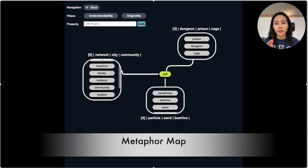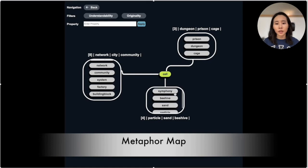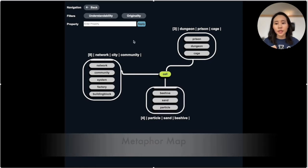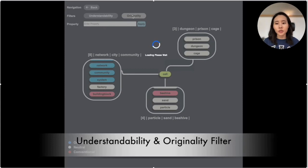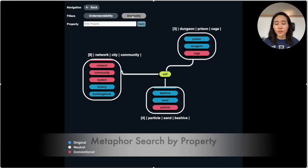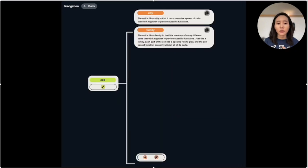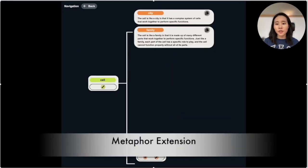For example, this group has the theme of network, city, and community. If they click the understandability filter, then the metaphor ideas are color-coded by difficulty levels of three stages, blue for basic level, white for intermediate, and red for advanced level words. If they click the originality filter, then it works in the same way. Users can also input a scientific property of the scientific concept. For example, the input can be that the cell is like a basic unit of living things, then the ideas are regenerated focusing on the input property.